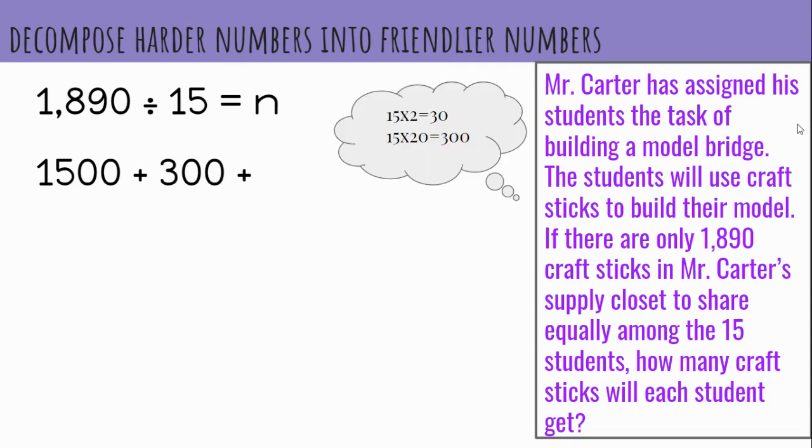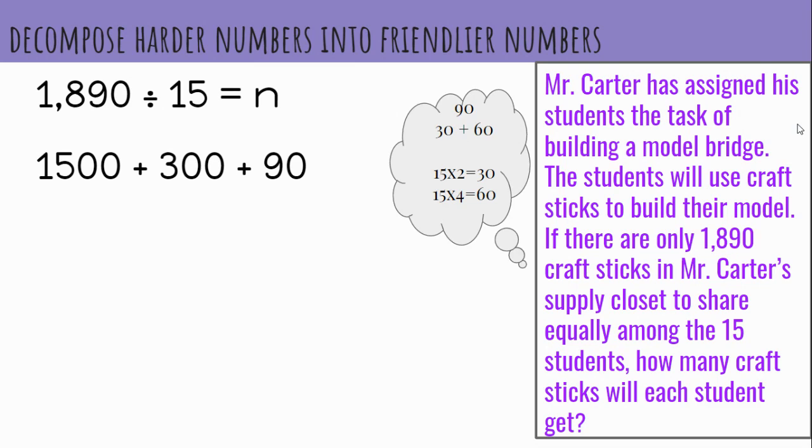Were you thinking 300 as one of those friendly numbers? 15 times 2 is 30, so 15 times 20 is 300. That's the number I thought of. That leaves me with 90.